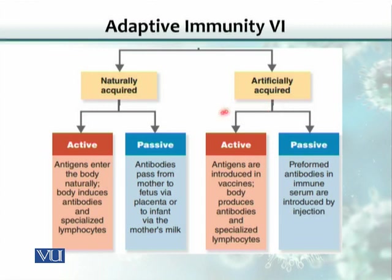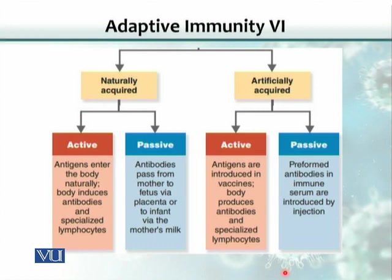Artificially acquired immunity is when the body does not get infected naturally — for example, you inject it with a vaccine. This is active because when you inject the antigen artificially in the form of a vaccine, the body actively responds and makes antibodies. Similarly, if someone is bitten by a deadly snake, preformed antibodies are given to save the patient — this is a passive process because the antibodies were made by somebody else.